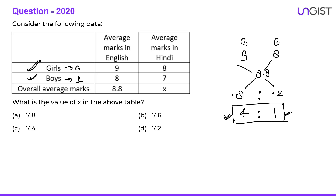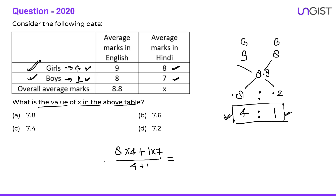The question asks for the value of x in the table. The average marks of four girls is 8 and the average marks of one boy is 7. So the total marks of the class: 4 × 8 = 32, plus 7 = 39, divided by 5 students = 7.8. So option A, 7.8, is the correct answer.